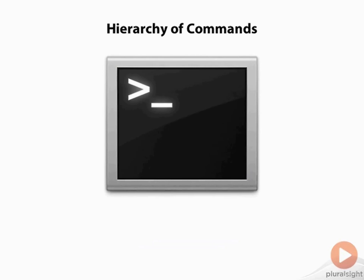Something you may have noticed if you have ventured into the command line of a Junos device is that there is a hierarchy of commands that you don't see in other devices. Because of the modular design of the system, Juniper has been able to create a CLI structure that is highly logical and intuitive to navigate. For example, all commands related to system services start with the command system and drill down from there. But we will go into that in more detail later on as far as navigating the CLI.